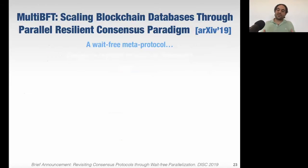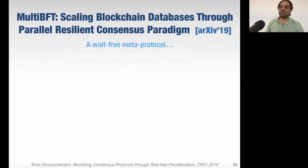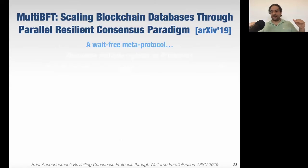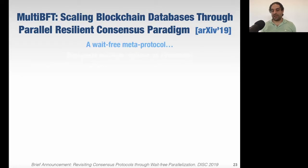So far we talked about a single election — reducing phases, improving and linearizing it. That was the focus of PoE. But now we looked at a meta protocol. The basic question my students Suyash Gupta and Yala raised: what if on the same world state, on the same data, we can allow multiple elections to happen in parallel and independently? That really allows us to scale the overall consensus.